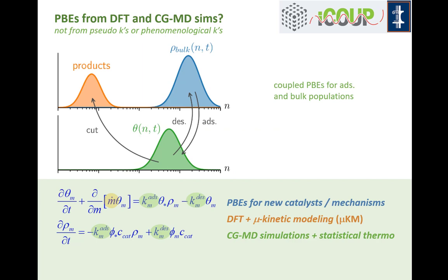One of the long-standing goals of this work is to build population balance models directly from DFT and coarse-grained simulations. That's not what I've been showing you so far — we've been writing down mechanisms and building in phenomenological rate laws, which is already an advance over what had been done before, but not quite at the level of parameterizing mechanisms using DFT calculations or adsorption isotherms from coarse-grained MD simulations. In principle the framework is now there to get a true multi-scale description going all the way from quantum chemistry and molecular interactions up to reactor-level analysis.